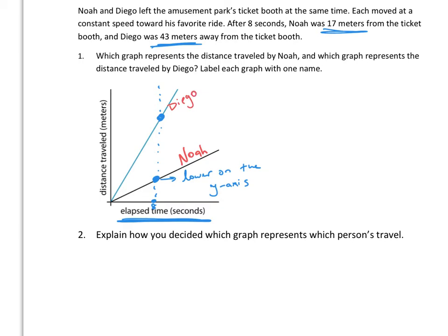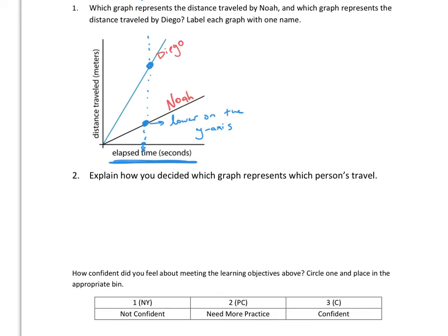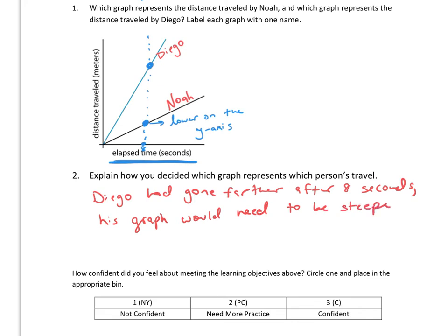Question 2 says to explain how you decided which graph represents which person's travel. So, since Diego had gone farther after 8 seconds, his graph would need to be steeper than Noah's.